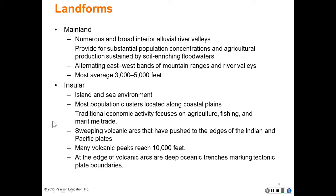The mainland has numerous and broad interior alluvial river valleys that provide for substantial population concentrations and agricultural production sustained by soil-enriched floodwaters. Alternating from west to east, there are bands of mountain ranges and rivers running north and south — a mountain range, then a river valley, then another mountain range, another river valley. Most mountains average only about 3,000 to 5,000 feet in elevation.